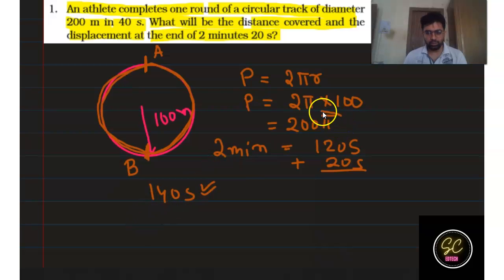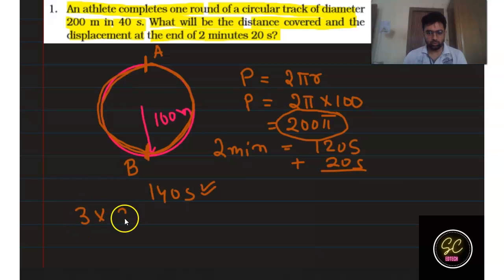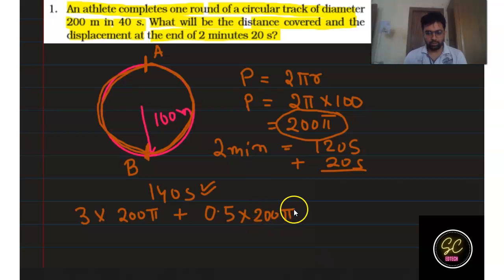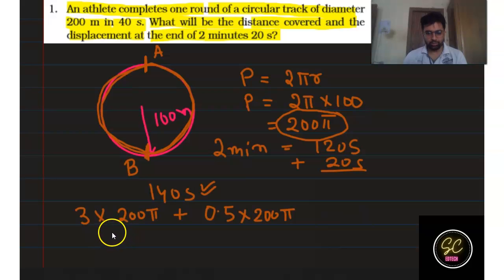The distance for 3 complete rounds is 3 × 200π, and for the half round it is 0.5 × 200π. So total distance is 3.5 × 200π, which equals 700π meters, approximately 2200 meters.